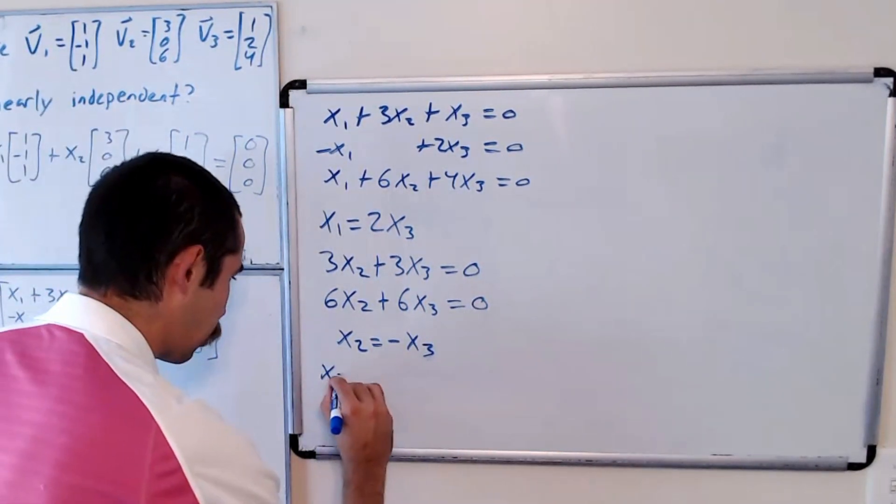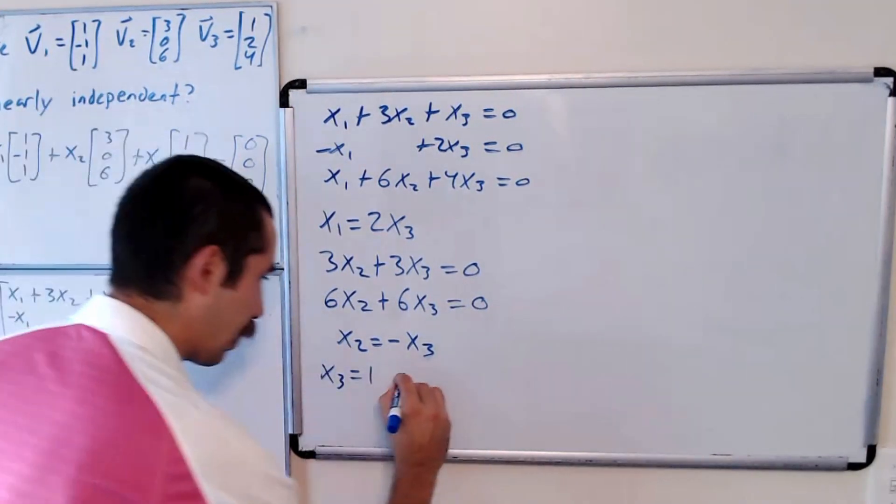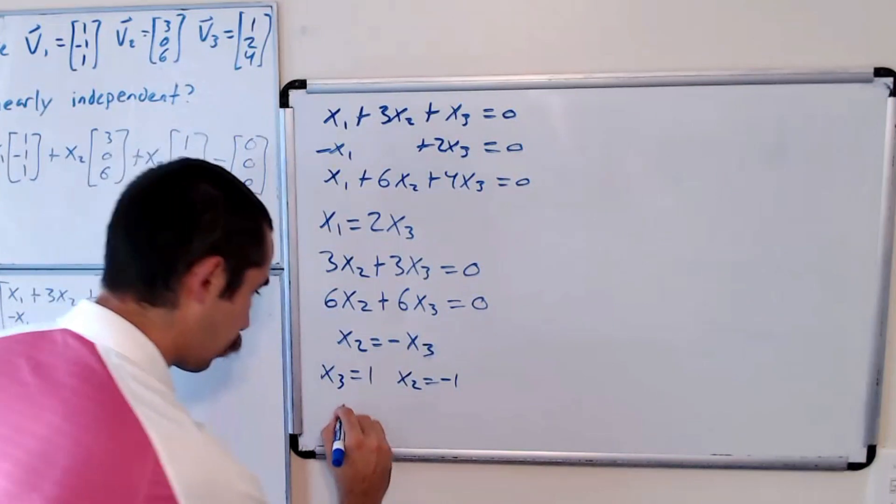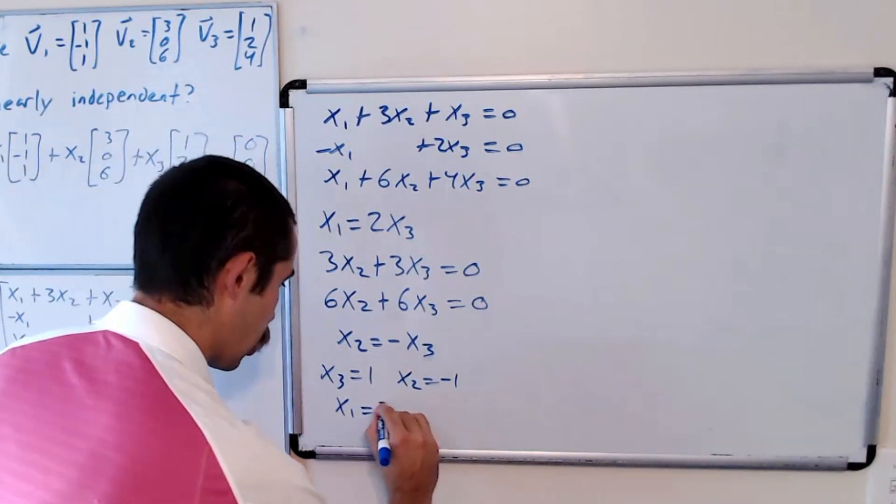So for example, we could plug in x3 equals 1, and that gives us x2 equals negative 1, and x1 equals 2.